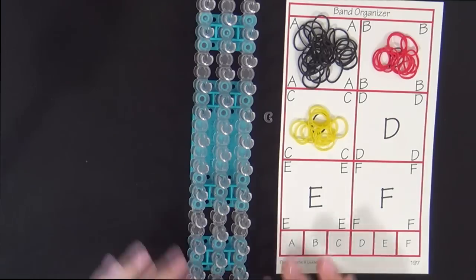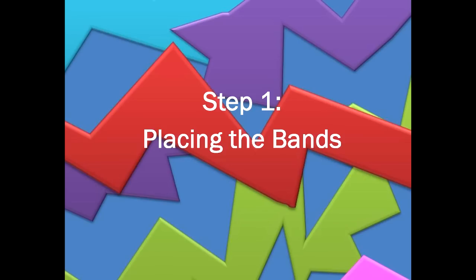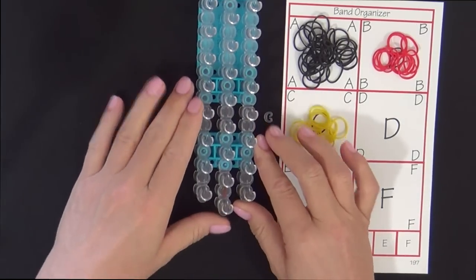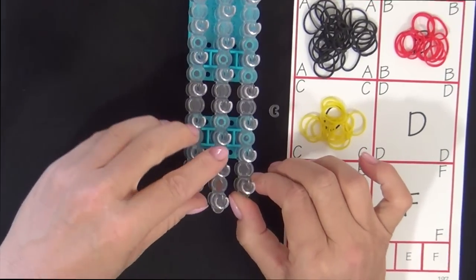Now, let's get started. First, we'll turn the loom so that the red arrow is pointing forward.